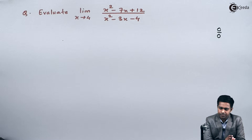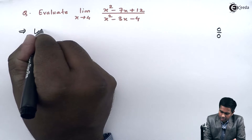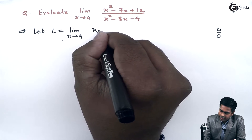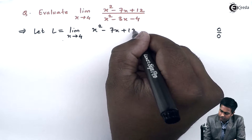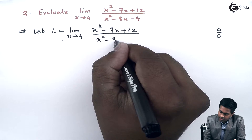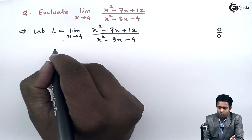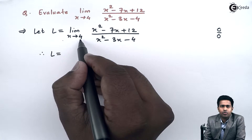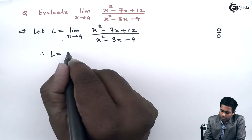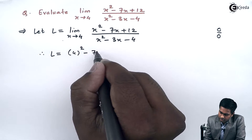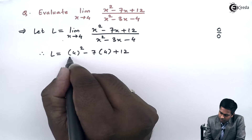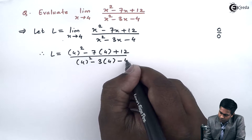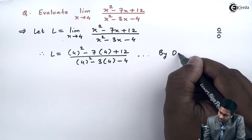Let's start with the direct method. I'll consider this given limit as L, where L equals the limit as x tends to 4 of x squared minus 7x plus 12 upon x squared minus 3x minus 4. In the direct method we substitute the value directly into the given function. So this becomes 4 squared minus 7 times 4 plus 12, upon 4 squared minus 3 times 4 minus 4.